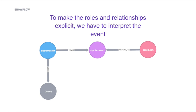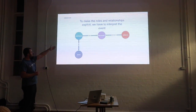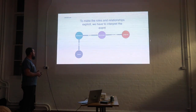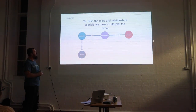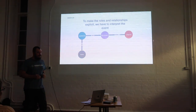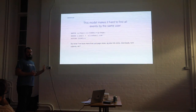To make roles and relationships explicit, we have to interpret the event. So we can have a user, Alice, who views a page on the Snowplow Analytics website. We can know she was using Chrome, and we can show that a referring page — Google — referred to that Snowplow page. But while this model is very visual and easy to understand, it's hard to find all events by the same user.